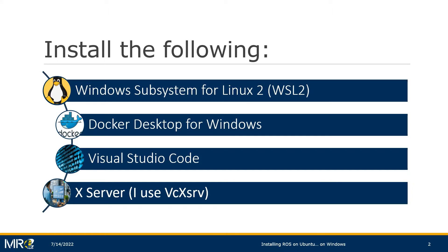First up is the Windows Subsystem for Linux 2 — emphasis on the 2, you're going to need that one. This allows you to basically have the full Linux kernel on your Windows machine; that is to say, you can run Linux on your Windows laptop or desktop.